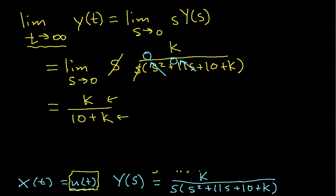So, that's the way to determine the steady state error. In this case, the steady state error is 1 minus the steady state value. And after some math, you find that this is 10 over 10 plus K.